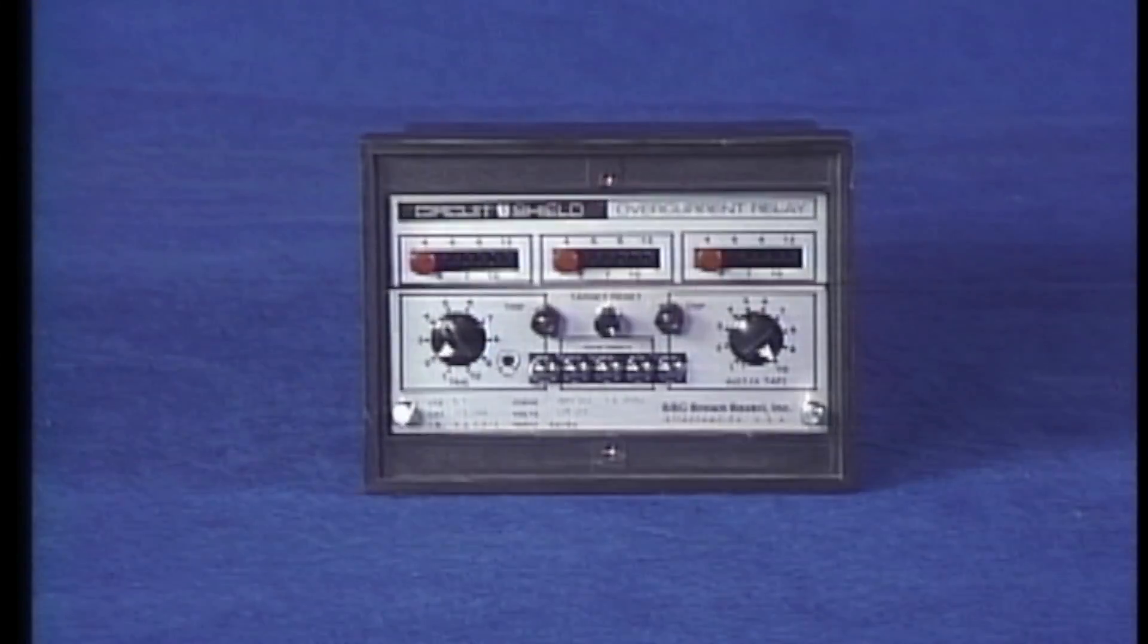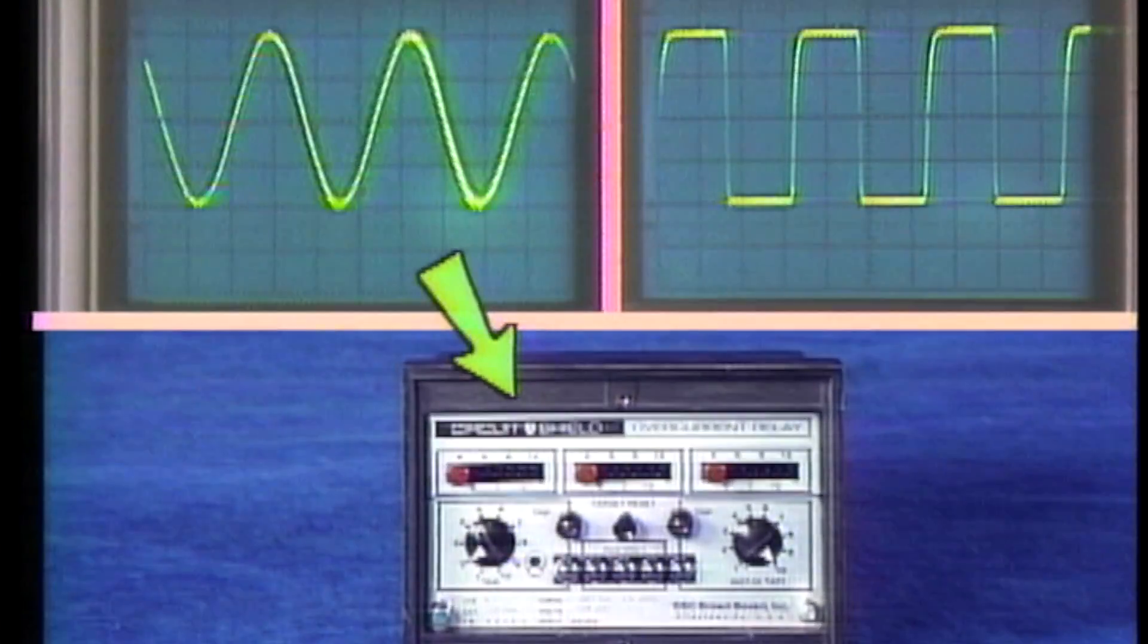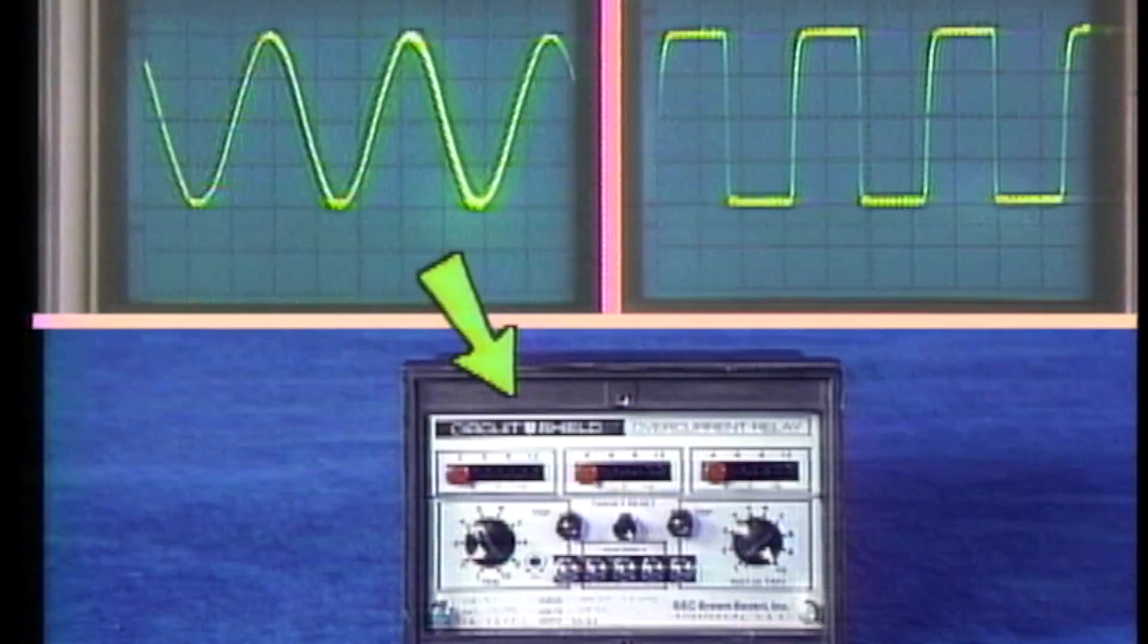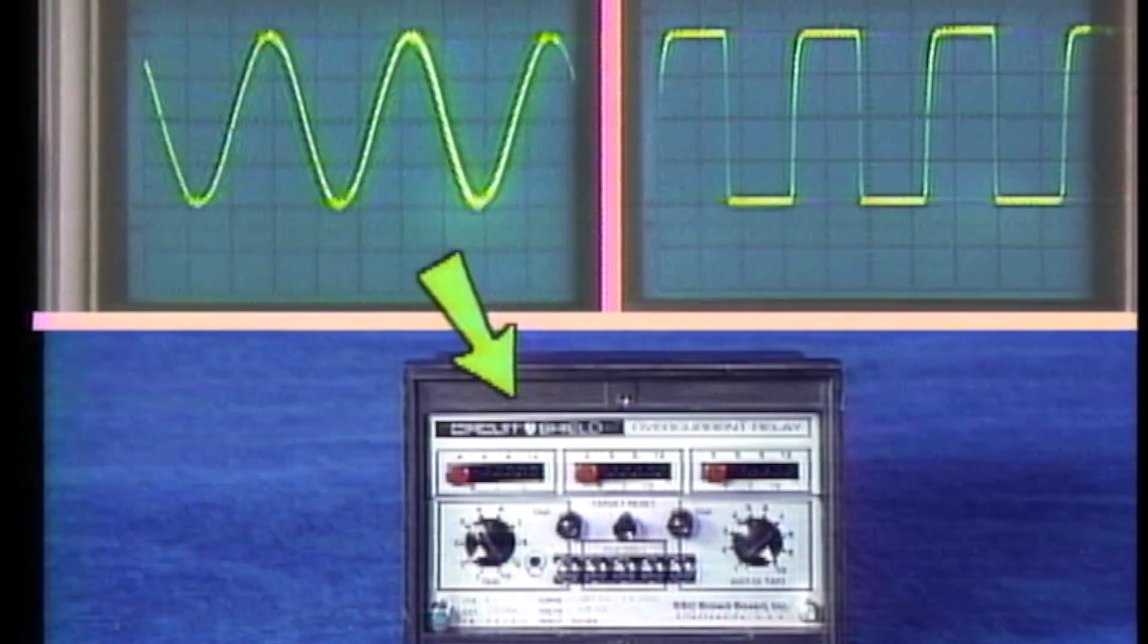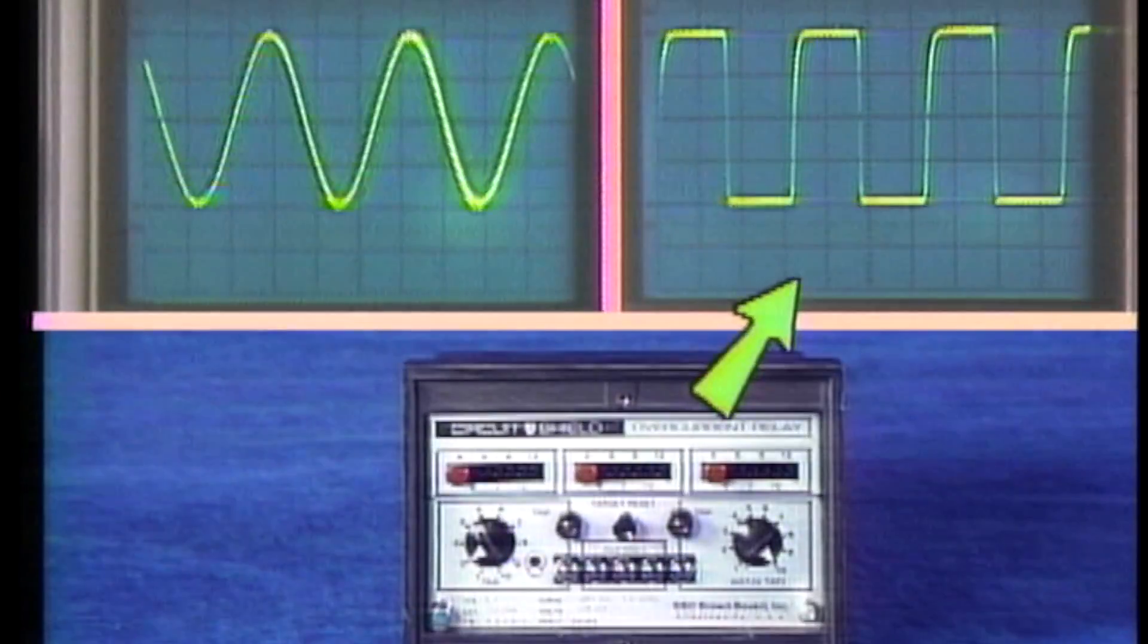In a solid state relay, the element is solid state circuitry. Input to this relay element is electronically processed through the circuits. When the input changes beyond a desired value, the circuitry provides an output signal.